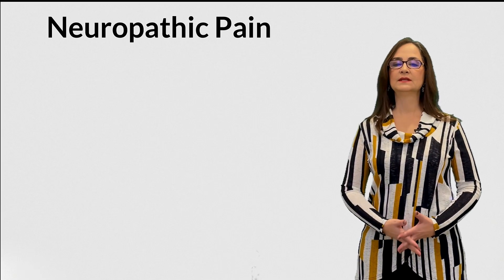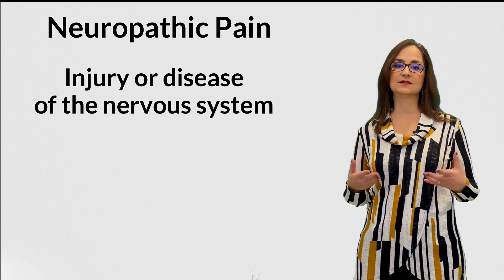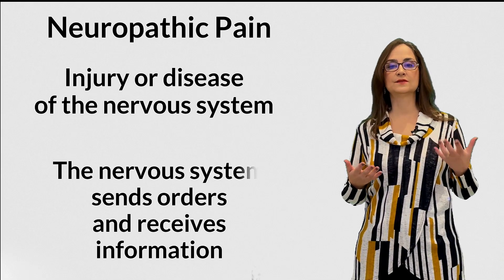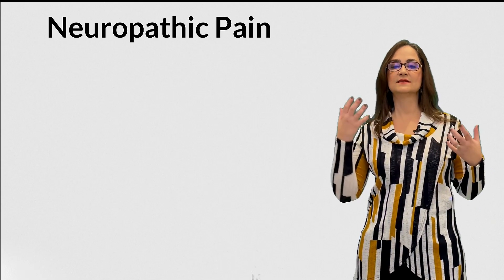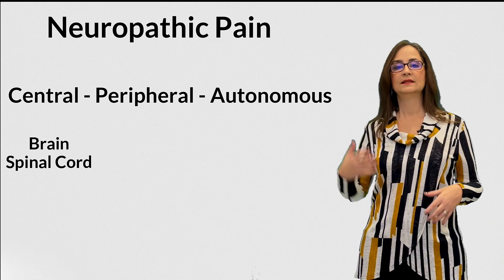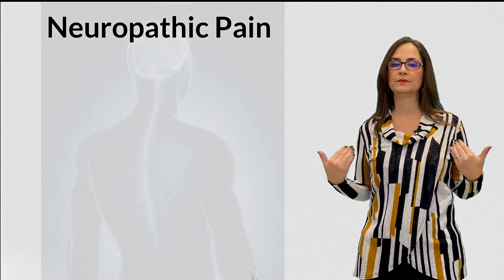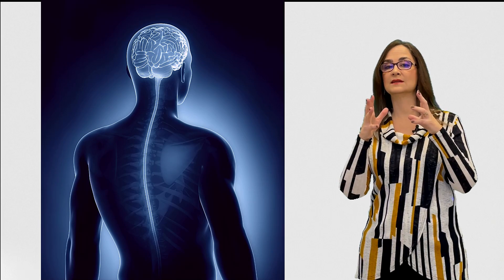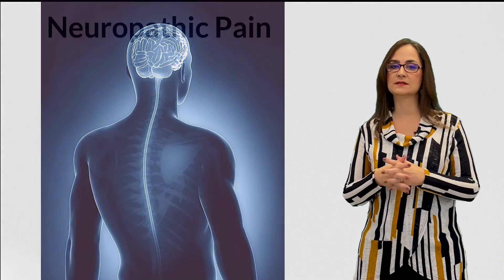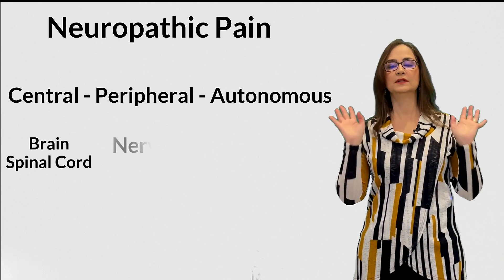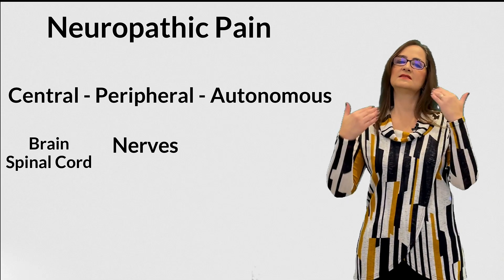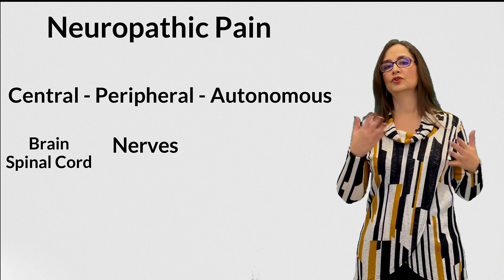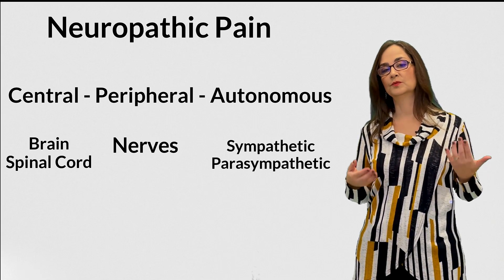The second type is neuropathic pain. This type of pain is a consequence of an injury or disease of the nervous system. The nervous system communicates with and controls the whole body, sending orders and receiving information. The nervous system comprises the central, peripheral, and autonomous nervous system. The central nervous system contains the brain and the spinal cord. The peripheral nervous system is composed of all the nerves that exit the spinal cord. The autonomous nervous system is divided into the sympathetic and the parasympathetic parts.